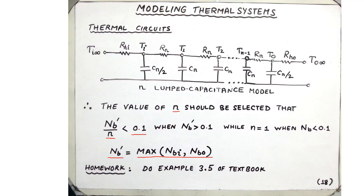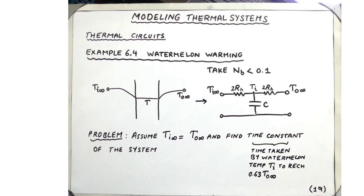There is a simple exercise at the end of Chapter 6 — Example 6.5 of the textbook — to be done as a homework exercise. I would like to conclude this lecture with the watermelon warming example, Example 6.4 of the textbook.